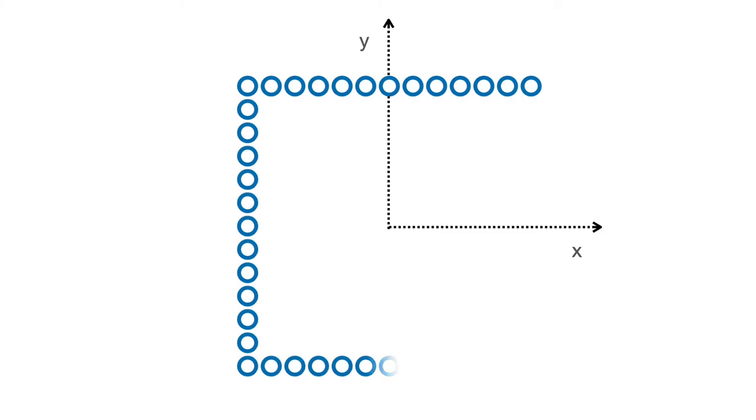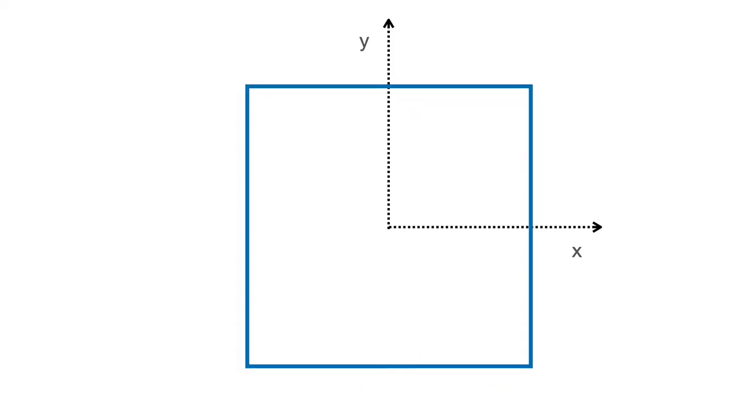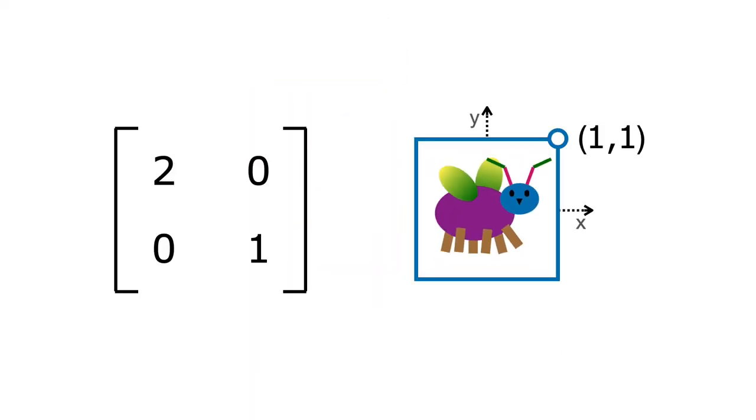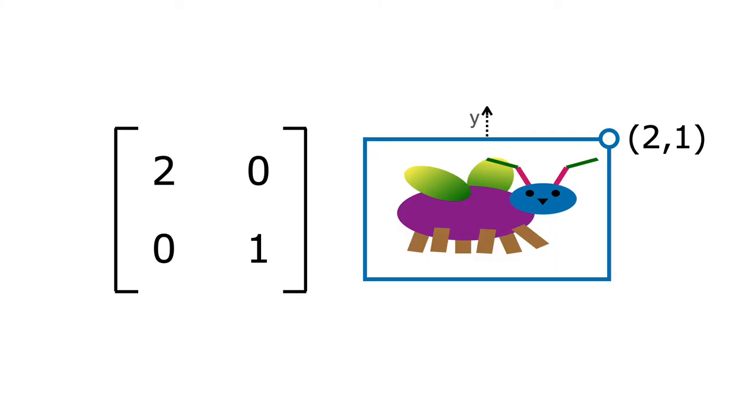These points trace out a square, for example, or a more complicated shape. The matrix transforms all of these points to create a new shape, in this case a horizontally scaled version of the old shape.